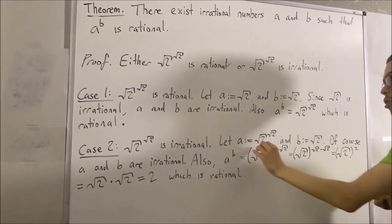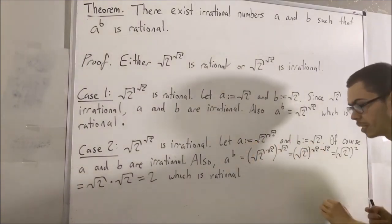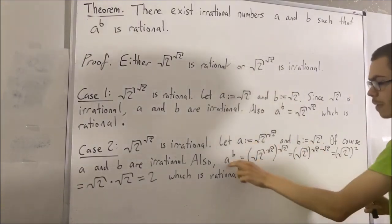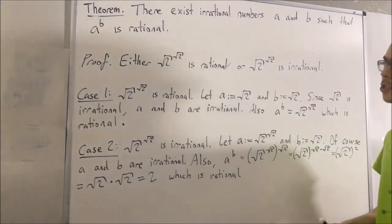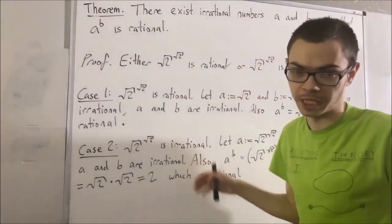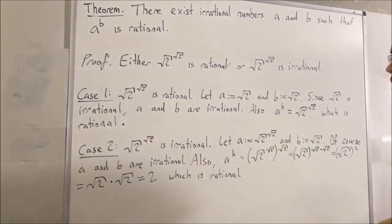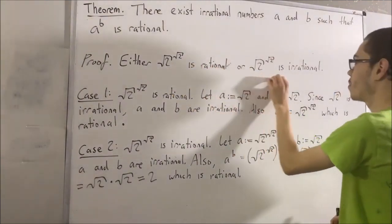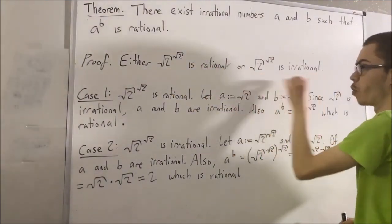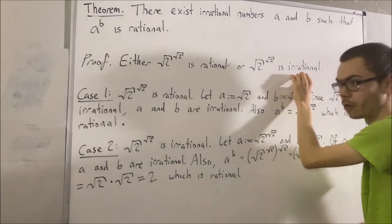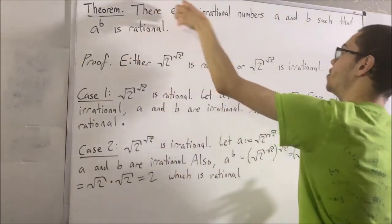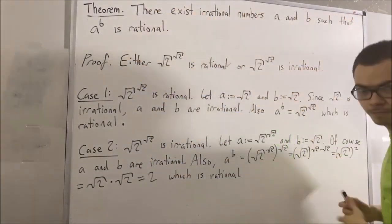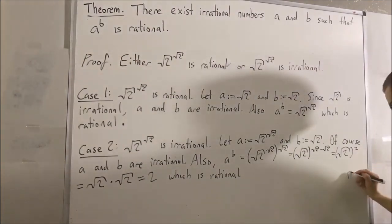So again, we have found two irrational numbers, a and b, such that a to the power of b is rational. So we have proven the theorem in the other case. No matter which one of these happens to be the case — one of them is true — no matter which one is true, this is true. So this completes the proof.